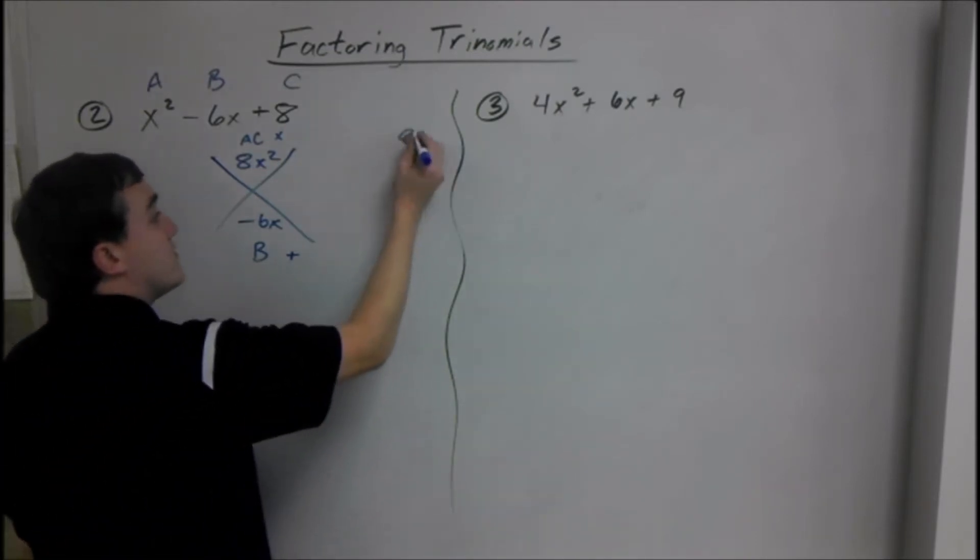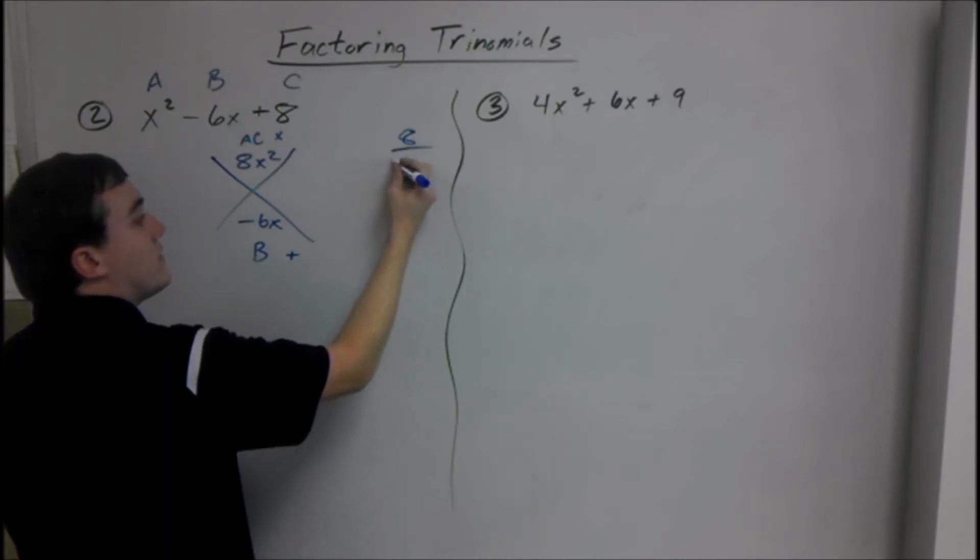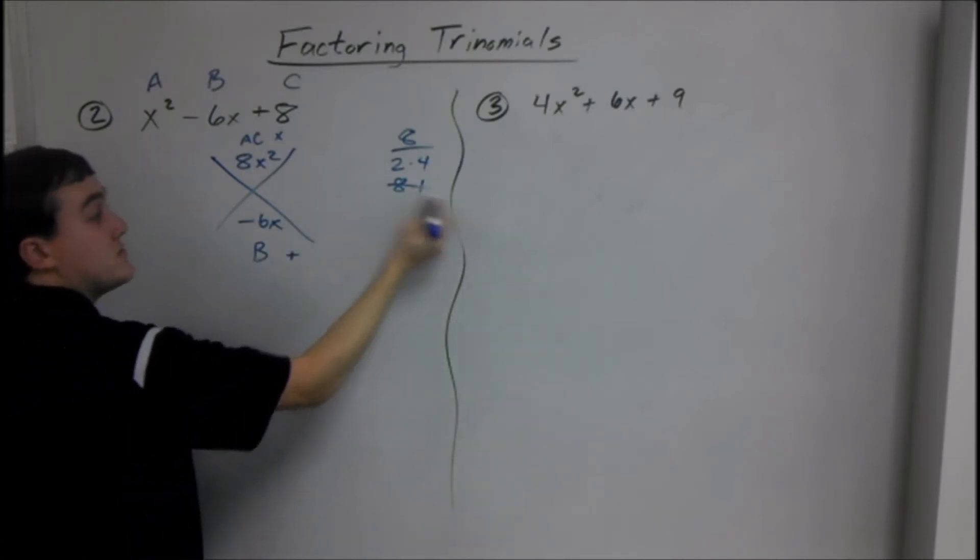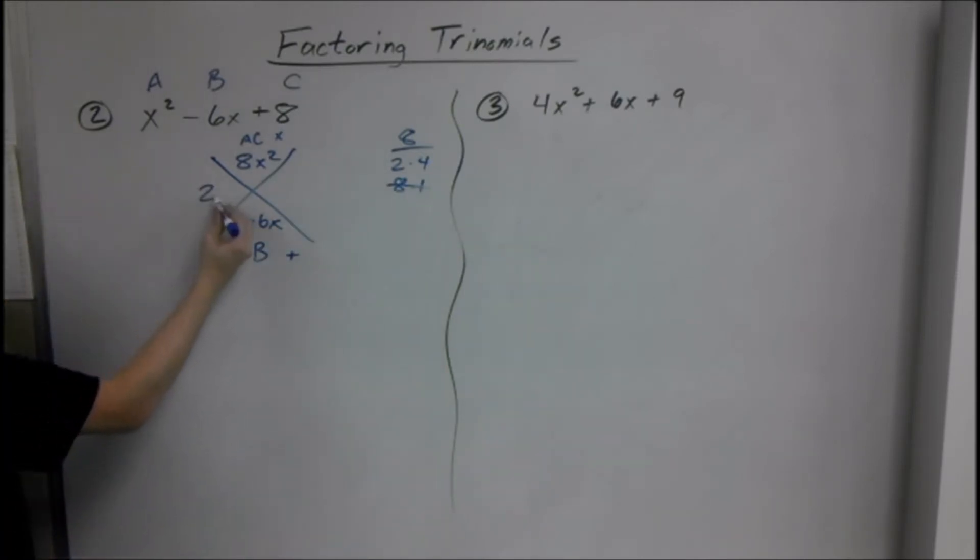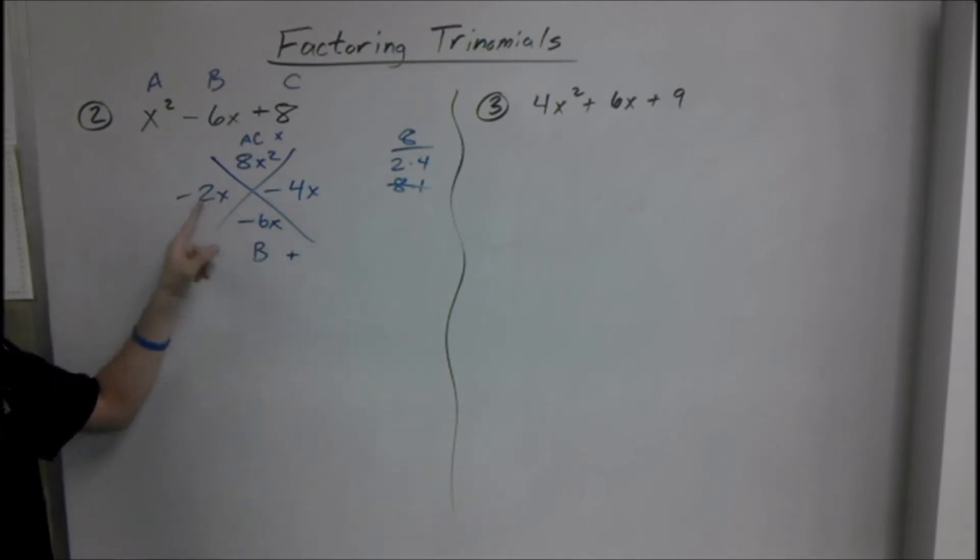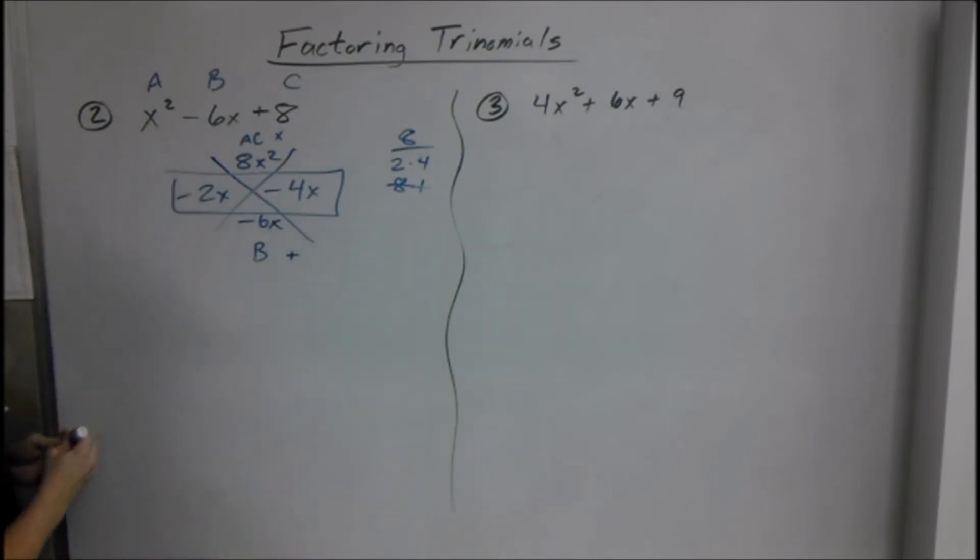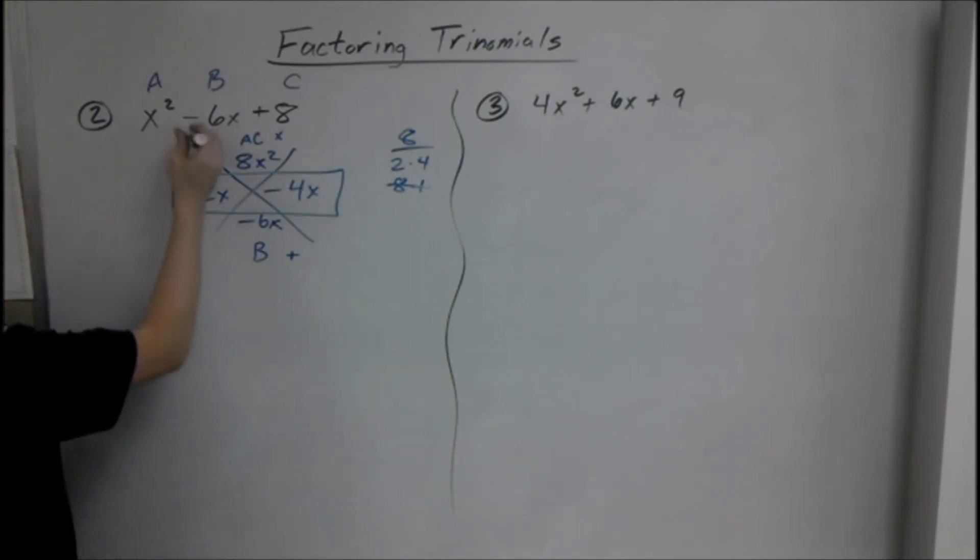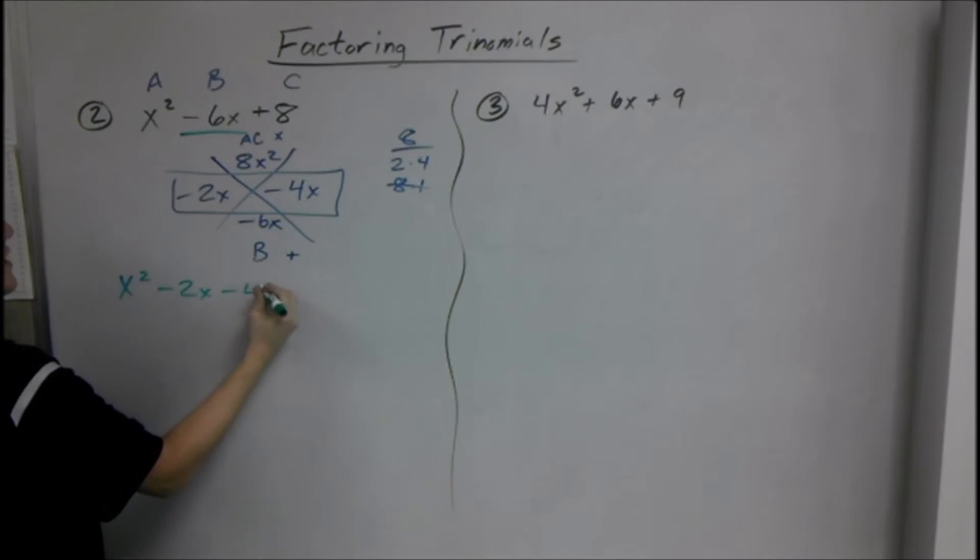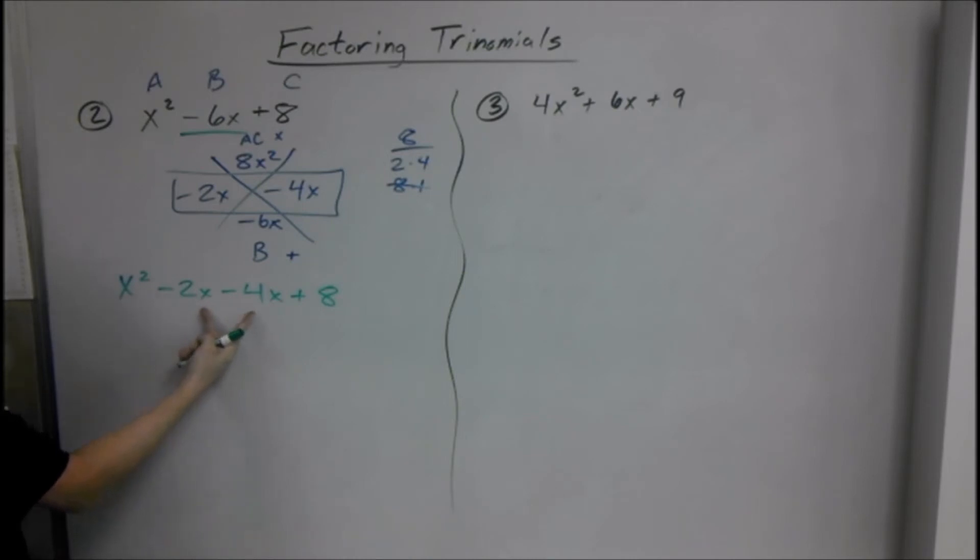If you think of the factors, we have 2 times 4 and 8 times 1. 8 and 1 will never add up to 6, so it is definitely not that one. So we are definitely using 2X and 4X. And for them to add up to negative 6, they both have to be negative. There is always going to be only one single set that multiplies to give you this number, adds up to this number. So we take these and they replace our middle term, negative 6X.